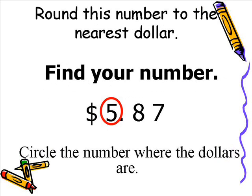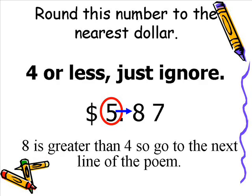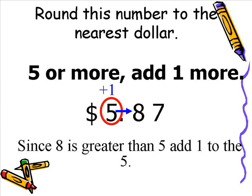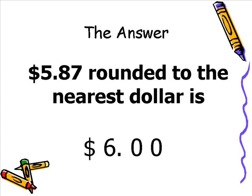This poem can also be used for rounding with money. Let's say we want to round a number to the nearest dollar. Remember the poem — find your number. The 5 is in the dollar spot, so we circle it. Look right next door; draw an arrow from the number you want to round to the number to the right. The next line says 4 or less, just ignore. 8 is greater than 4, so we go to 5 or more, add 1 more. Since 8 is greater than 5, we add 1 to the 5; it becomes a 6, and we change all numbers to the right to 0s. So $5.87 rounded to the nearest dollar is $6.